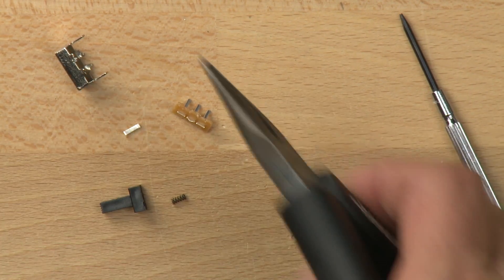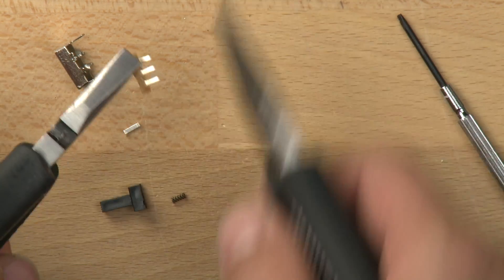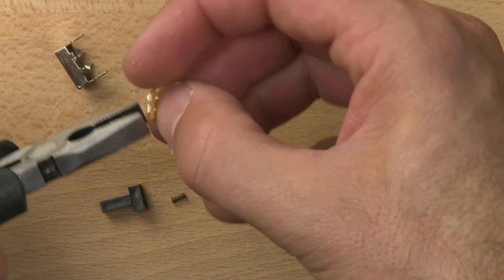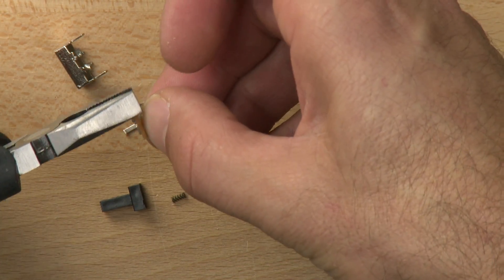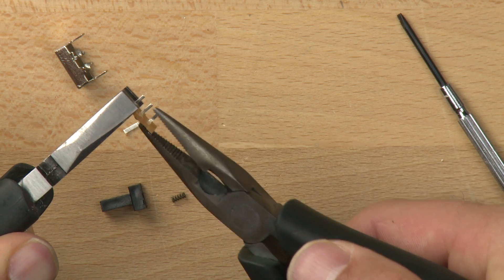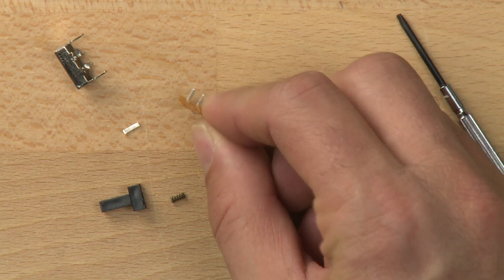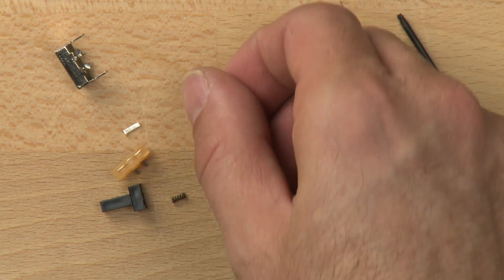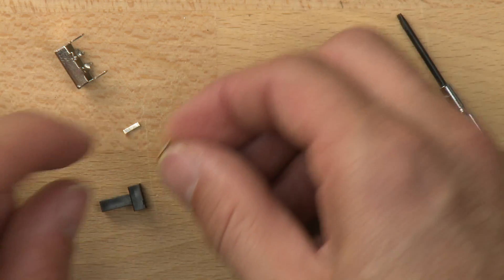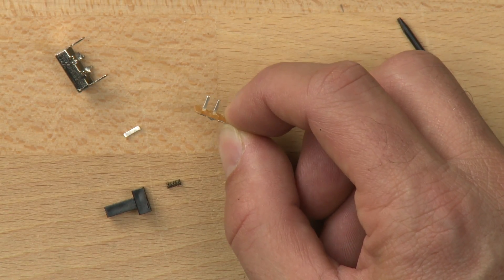Now, one more thing is we're actually using this switch as a single pole, single throw switch. So we're not actually using both of the throws. So we just bent this throw out of the way because we only needed one of the throws. And the main reason why we're using this switch for SpoutBot is that we just got a really good deal on it. You can find it for about 5 cents online. So it's really cheap and it happens to do the job just fine.